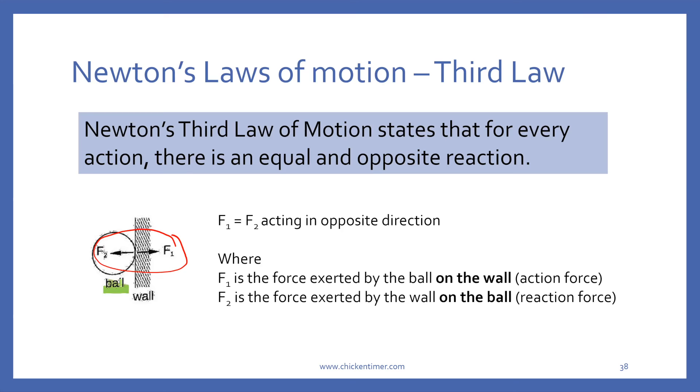So F1, let's color code the ball. So F1 is the force exerted by the ball on the wall. The ball hits the wall and it pushes the wall. So the force exerted by the ball is inwards towards the wall. Then you have the wall, and the wall, because of what the ball did, will react and exert another force called F2 on the ball in the opposite direction.